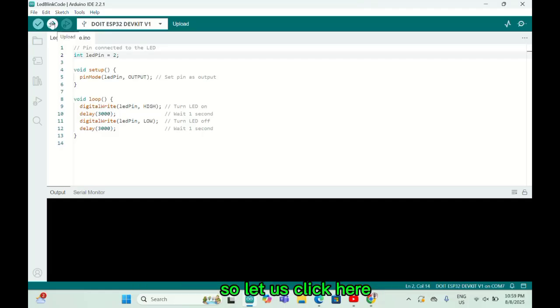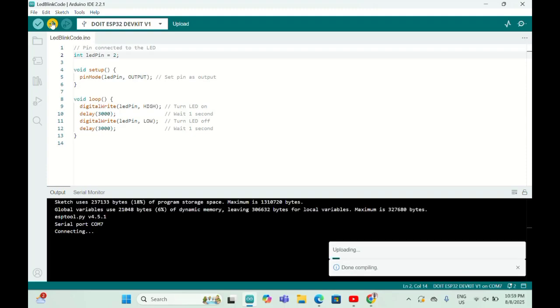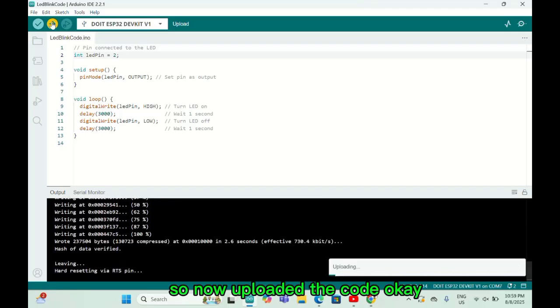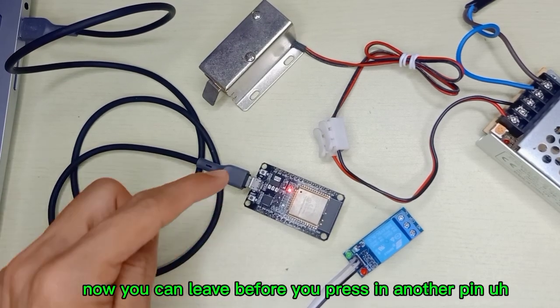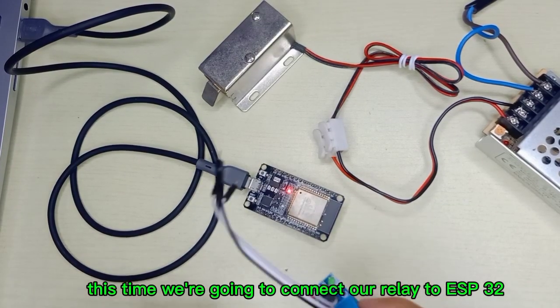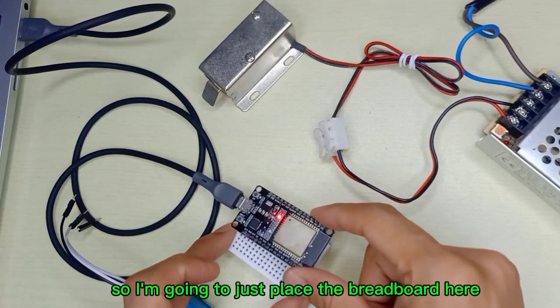So let's click here. Now upload the code. Okay, now you can leave it. Before you press the enable pin which is for the reset, now we're going to connect our relay to ESP32. I'm going to just place the breadboard here.